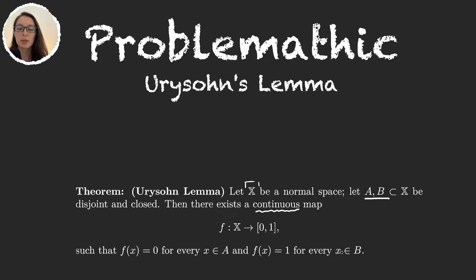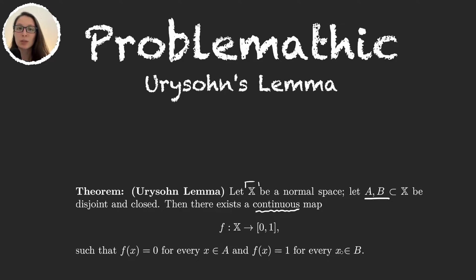This theorem, if you know a thing or two about analysis, might not seem surprising, because in analysis to build a function like this you would take a step function and modify it by doing the convolution with a function in, for example, the Schwartz class. What is incredible about it is that this space X is just any topological space — it's normal — and asking for normality sounds like a lot, but it's just any topological space, so it's a very strong theorem.